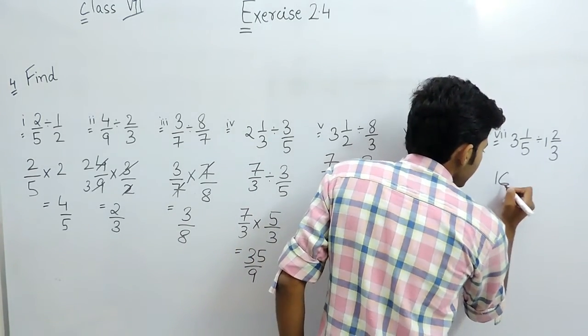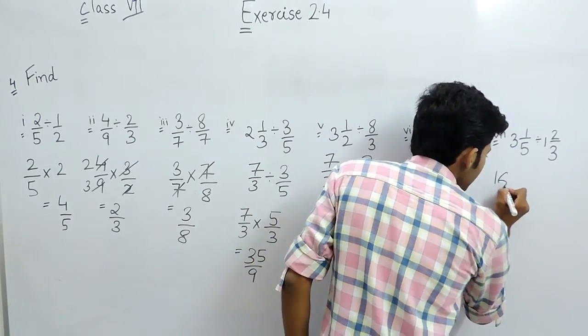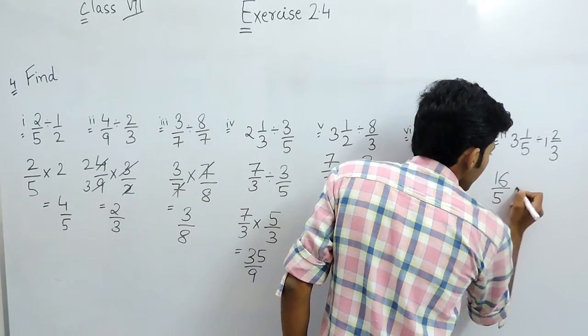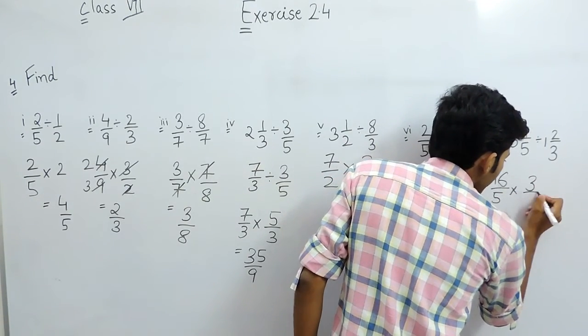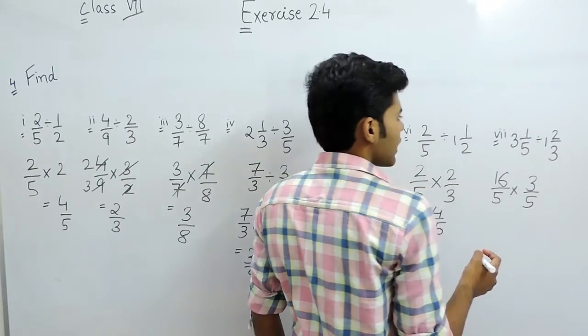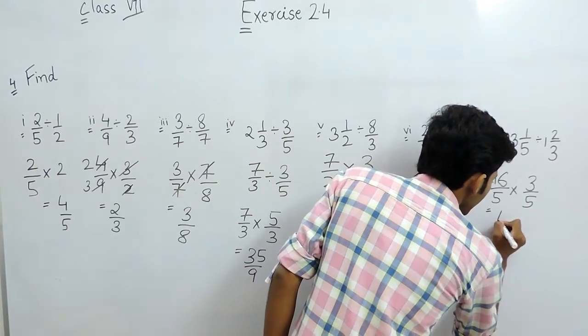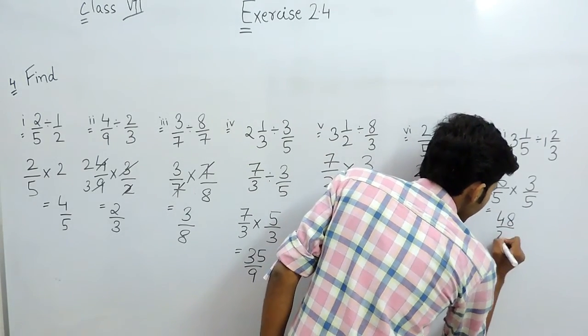In this part it will be 16 by 5 multiplied with 3 upon 5 and that will be 48 by 25.